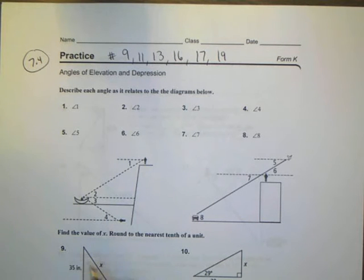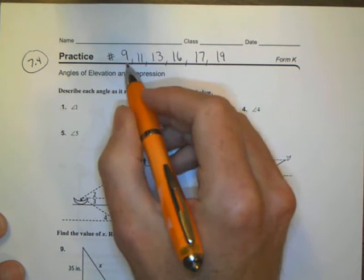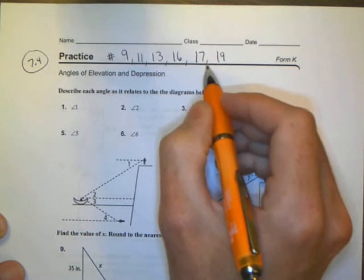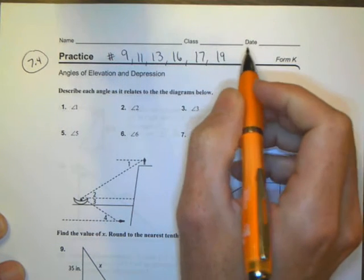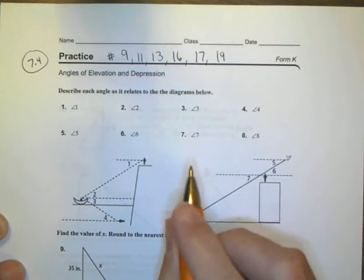Okay, this is Math 2, Unit 7, Lesson 4, Homework Help, looking at questions 9, 11, 13, 16, 17, 19 today, solving for angles of elevation and depression.